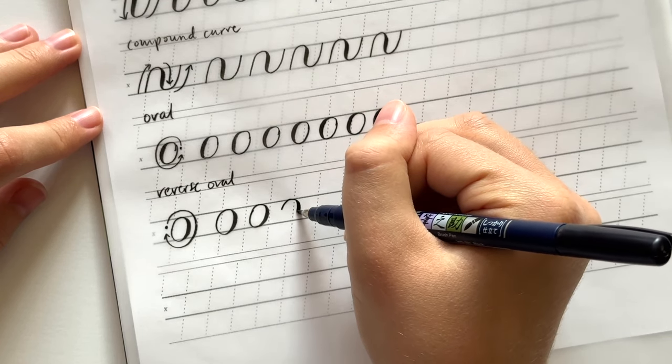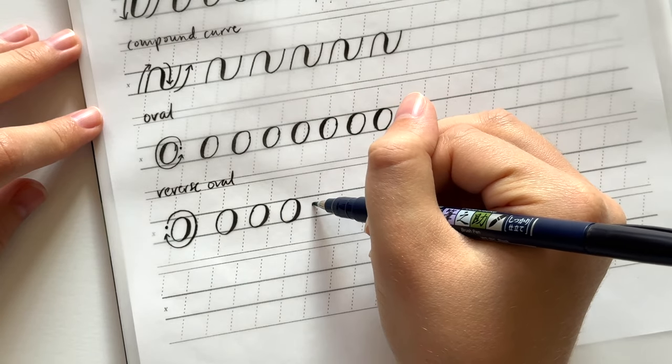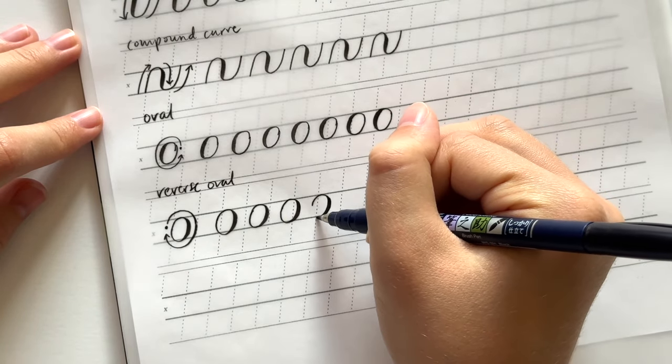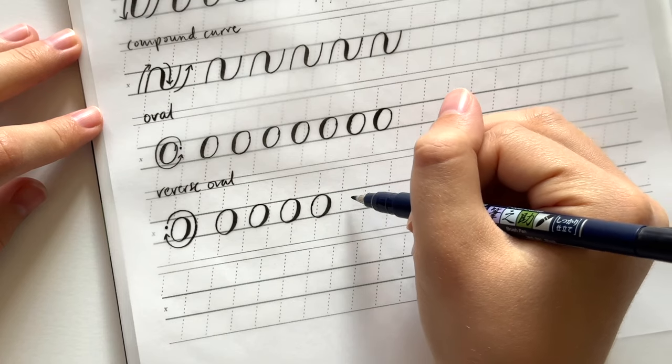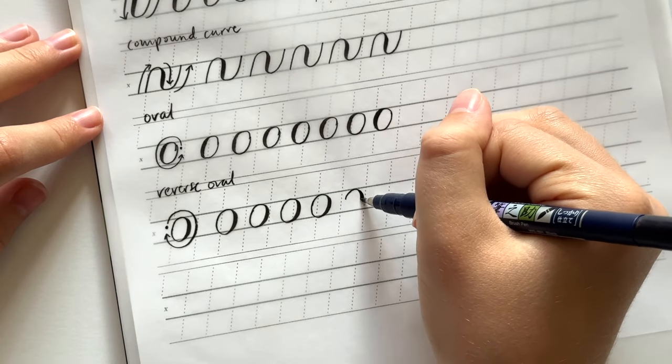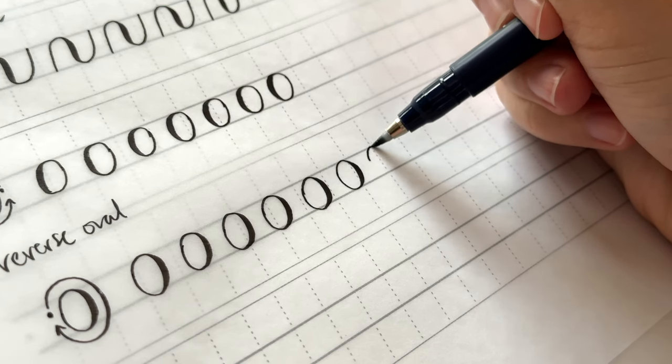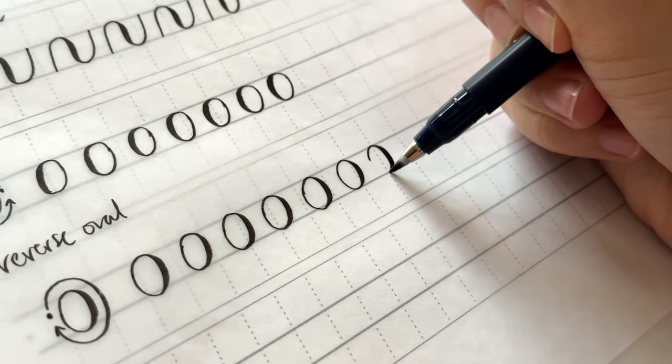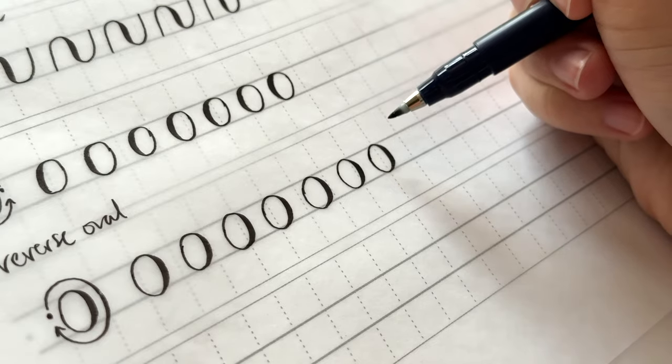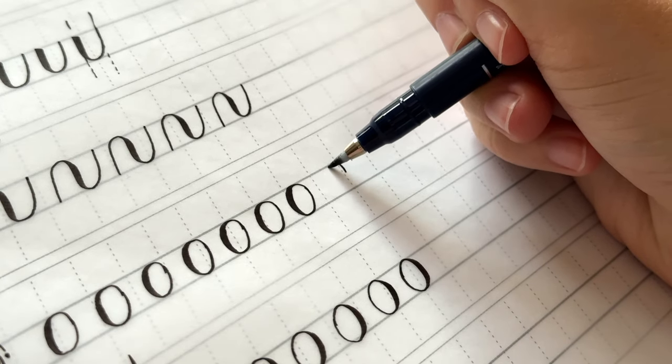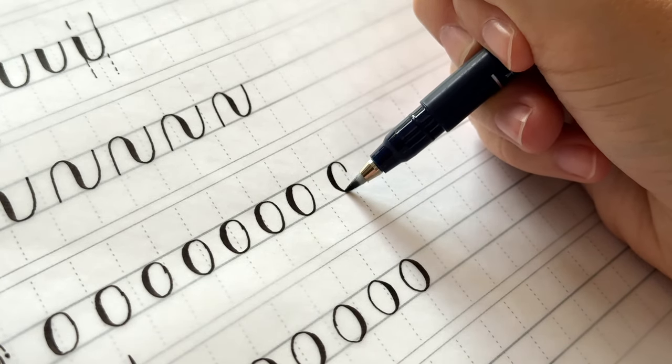And for me at least the ovals are the trickiest of the basic strokes so you're probably going to have to take a lot of time to practice these and work on getting them nice and consistent. And you'll notice that as I'm doing these strokes I'm subtly adjusting the pressure I put on the pen. So you can notice how the pen tip is flexing as I lift and increase pressure.